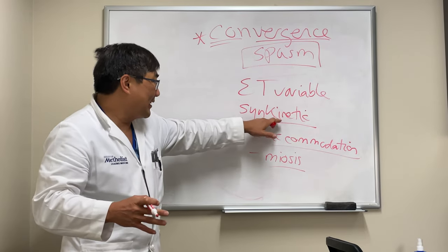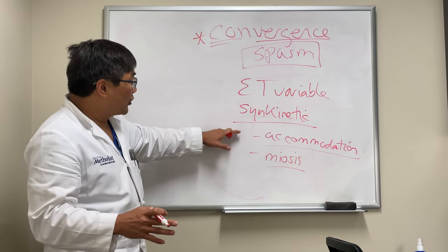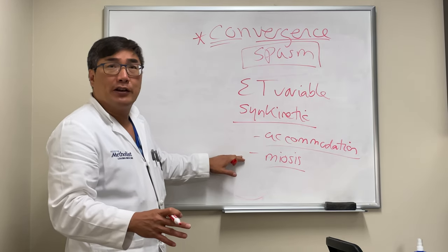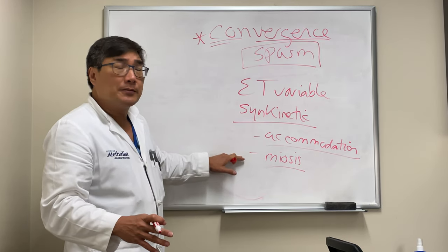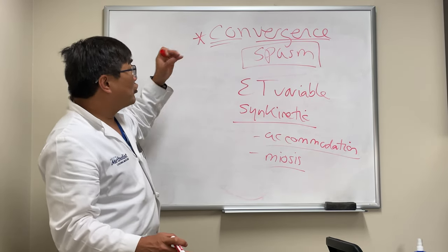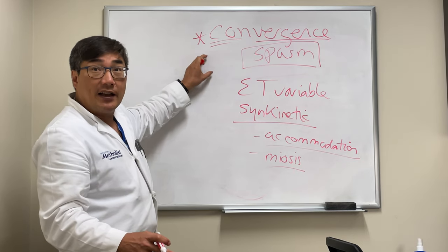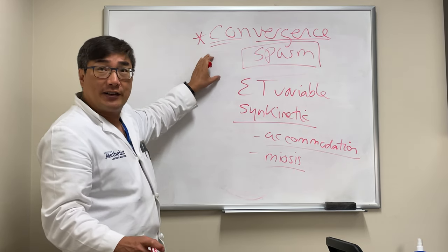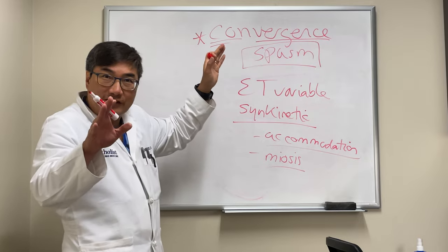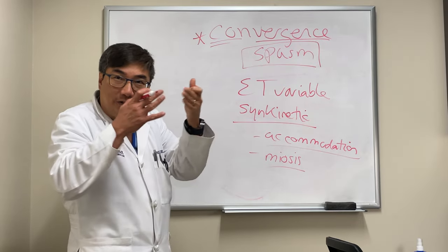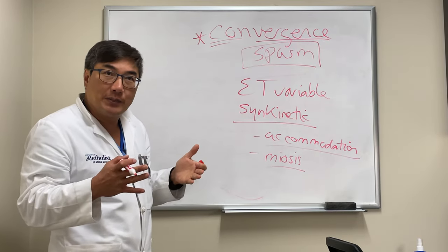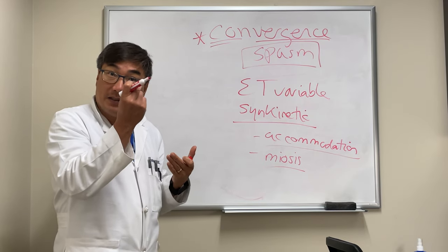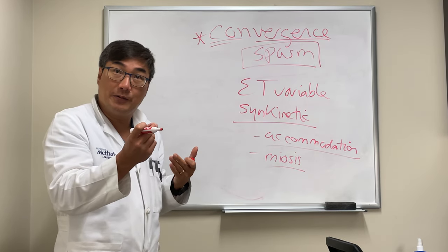Synkinetic means together in movement: convergence spasm, accommodative spasm, and miosis of the pupils. It's usually a non-organic finding of functional visual disorder because it's voluntary — you can try it yourself. You can converge and create your own convergence spasm, and you'll see that it blurs your vision and also causes miosis of the pupils.